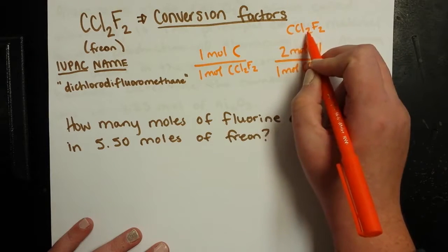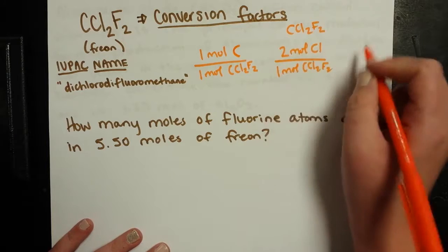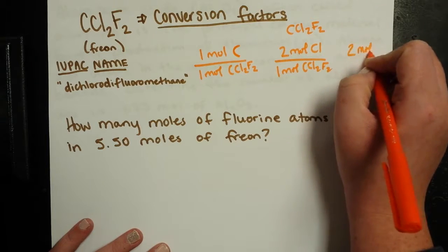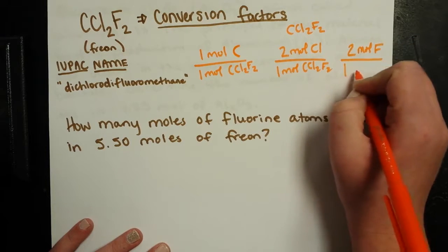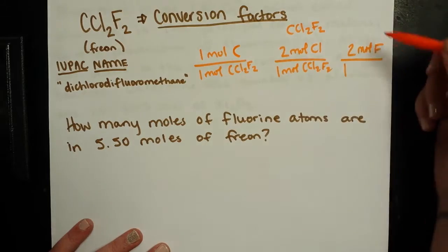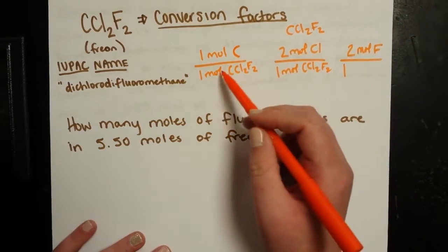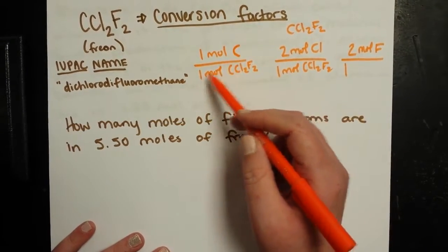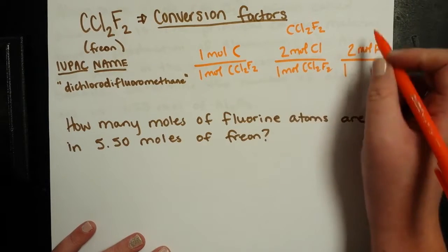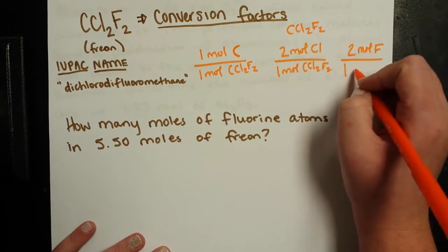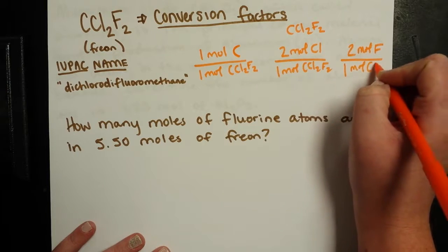There's one carbon for every one of these, two chlorines for every one of these, and two fluorines for every one molecule of Freon. But since, again, we're looking at the molar scale, now I've got a mole of carbon atoms for every mole of Freon, two moles of chlorine atoms for every mole of Freon, two moles of fluorine atoms for every mole of Freon.